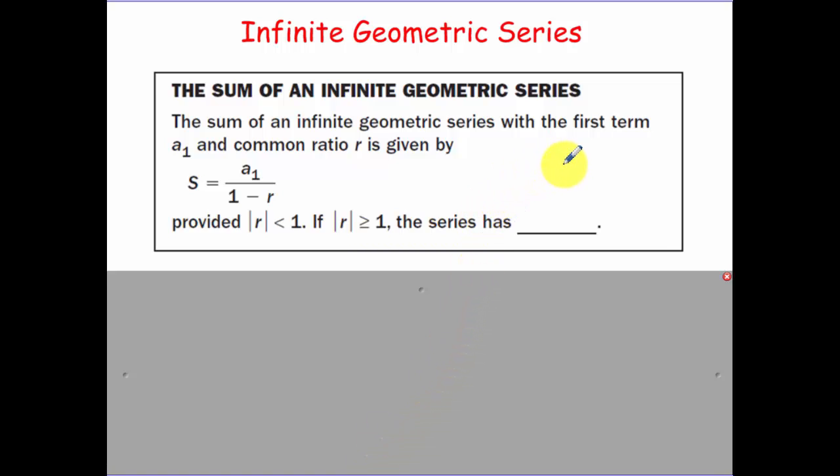The sum of an infinite geometric series provided that the ratio, whether it's positive or negative, so the absolute value of it is less than 1. So your ratio is a fraction less than 1 is your first term divided by 1 minus r.